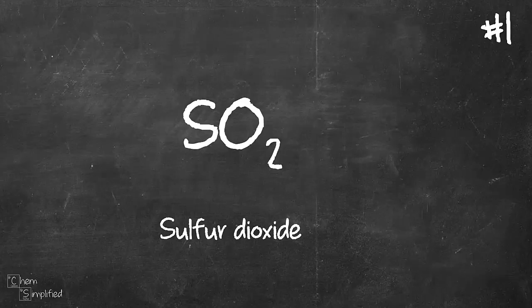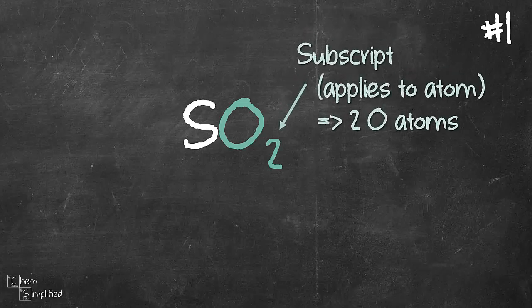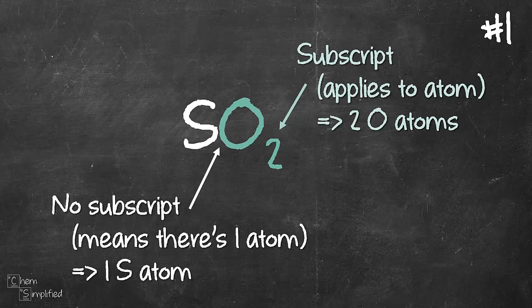Let's start with our first example, sulfur dioxide, SO2. See that small 2 at the bottom of the oxygen? That's a subscript and that applies only to the atom it is next to, which is oxygen in this case. So that means we have two oxygen atoms. And notice that sulfur, there's no number at the bottom. No subscript means there's one atom, so we have one sulfur atom.